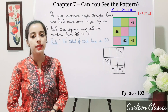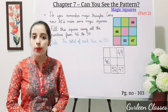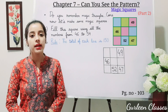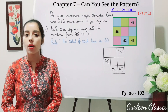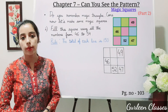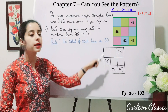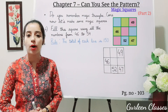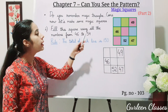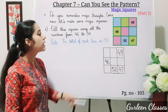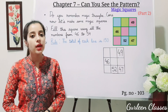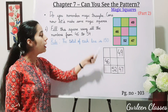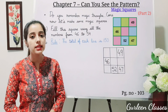Now let us do the question from your book. Fill the square using all the numbers from 46 to 54. In this magic square from page 103, row 1 has 49, row 2 has 46, and row 3 has 52 and 47. The total of each line is 150.